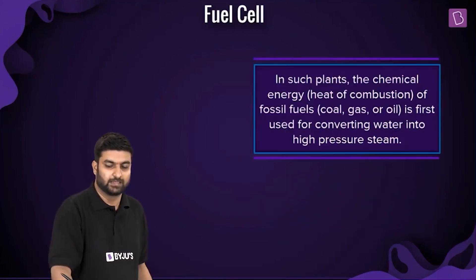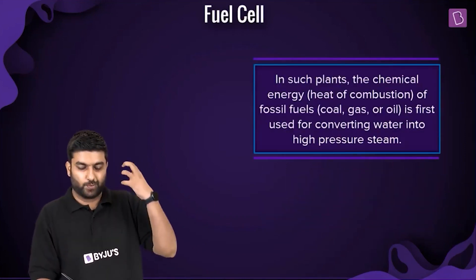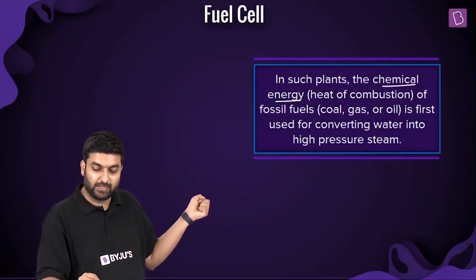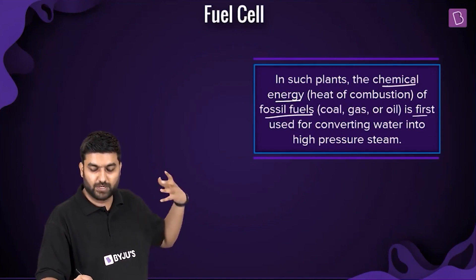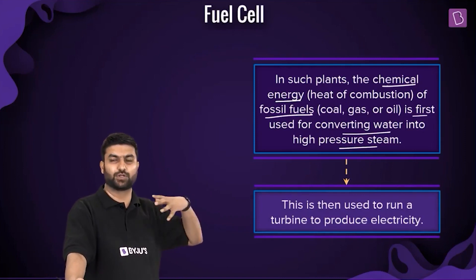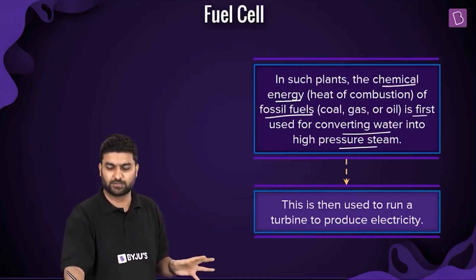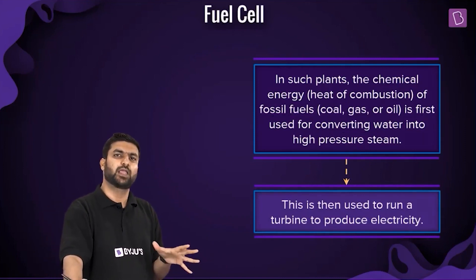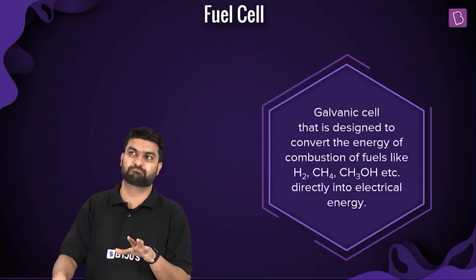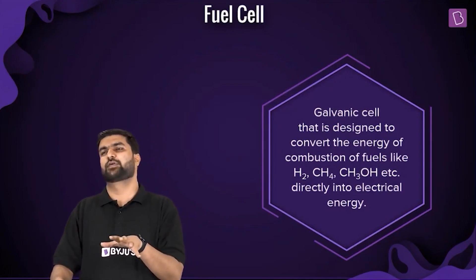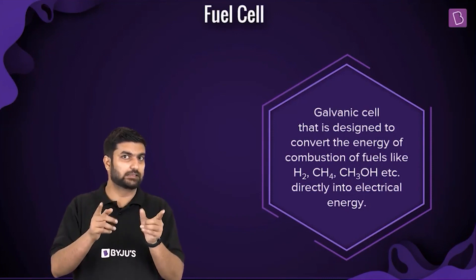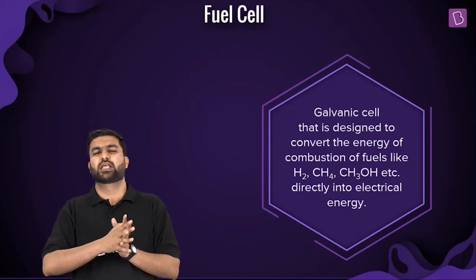Instead of going the normal way — converting the chemical energy of fossil fuels into heat, then converting water into high-pressure steam, and then using that to move the turbine to produce electricity — we thought: we are now advanced enough to produce galvanic cells in a better way.